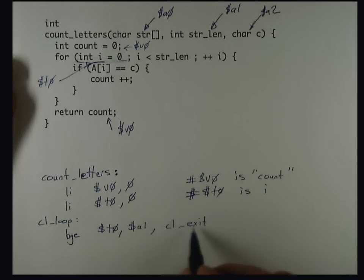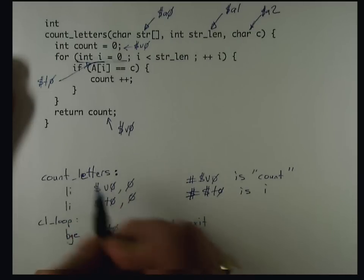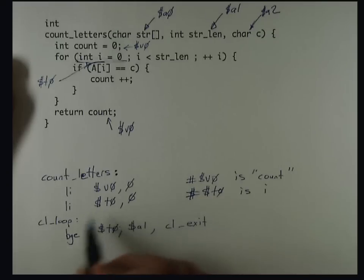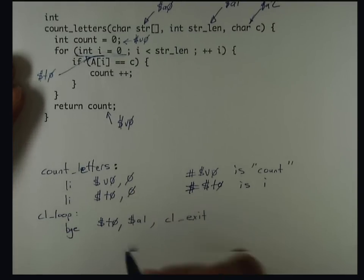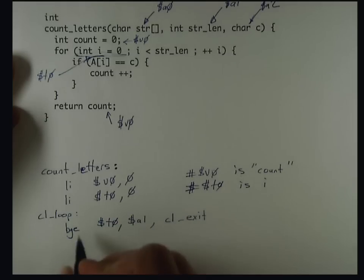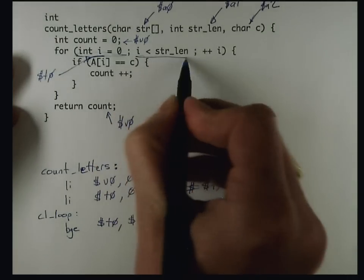I'm prefacing all of my labels here with CL, which is an abbreviation of count_letters. And that way, these labels are more likely to be specific to this function that I'm writing. So I've now handled this part.